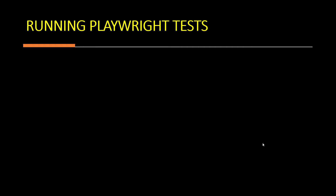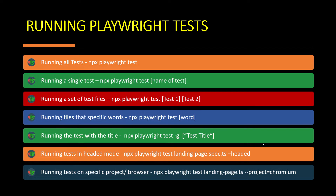We have multiple ways to run tests. To run all tests, use the command 'npx playwright test'. To run a single test, use 'npx playwright test' followed by the name of the test. To run a set of test files, use 'npx playwright test' with the names of test files listed. To run files containing a specific word, use 'npx playwright test' followed by that word. To run a test with a specific title, use 'npx playwright test -g' and the title in double quotes.